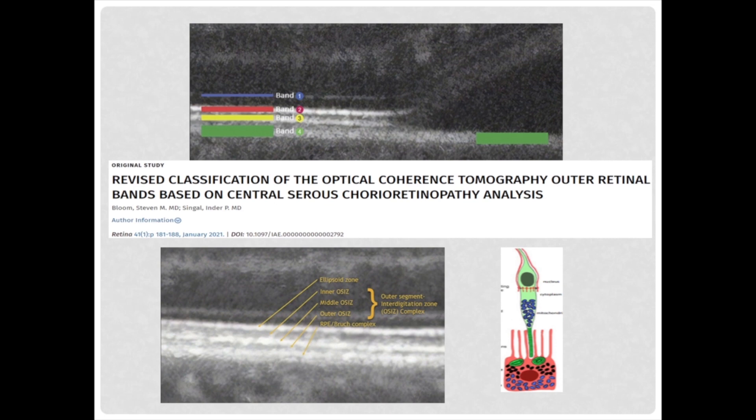Bands 2 and 3 are also called as zones. What contributes to these bands: the first is the external limiting membrane, the second hyperreflective layer is the ellipsoid zone, the third is the interdigitation zone, and the fourth is the RPE Bruch's complex. The hyporeflective area between band 1 and 2 is the myoid zone, but the hyporeflective areas between 2 and 3, and 3 and 4, are not accounted for.